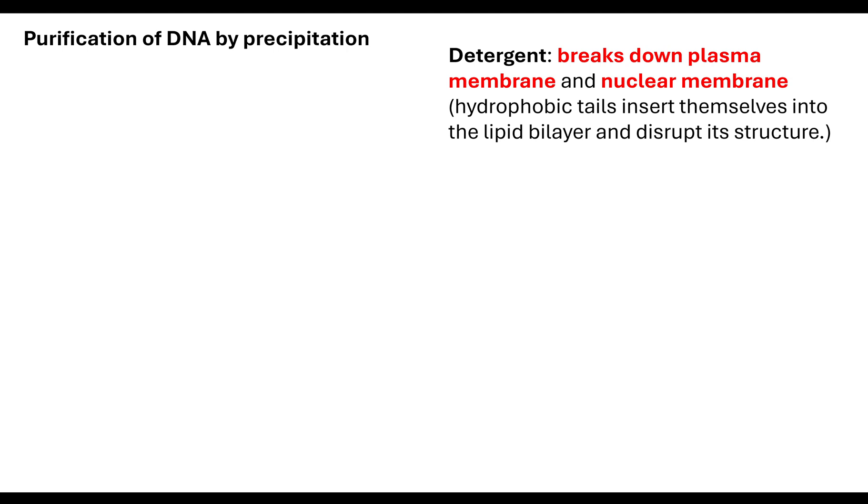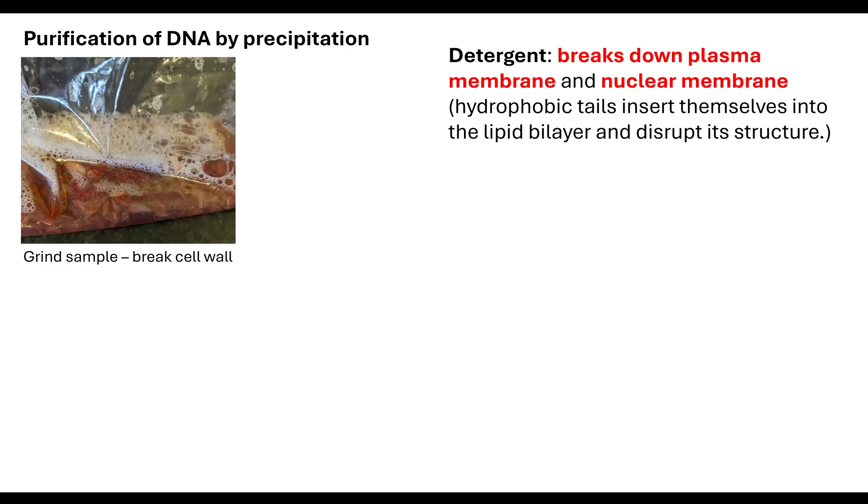Now we need to look at the purification of DNA by precipitation. In my lesson on biological membranes, I talked about the fact that solvents have an effect on membranes. Detergent is used to break down a plasma membrane and nuclear membrane because those hydrophobic tails are able to insert themselves into the lipid bilayer and disrupt its structure. Whenever we do purification of DNA, we always actually do it with plant cells rather than animal cells.